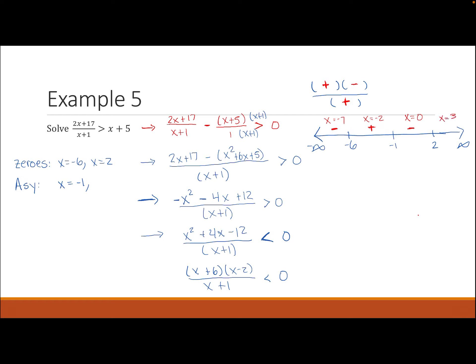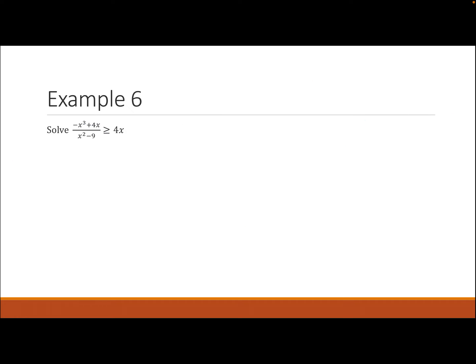We want where the expression is less than 0, so we choose the negative intervals. Since there is no equal bar, all endpoints are parentheses. The solution is (−∞, −6) ∪ (−1, 2).